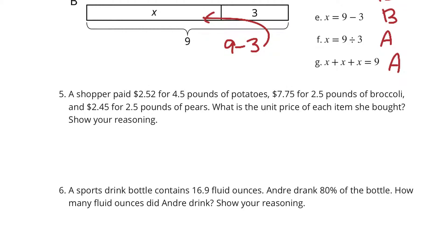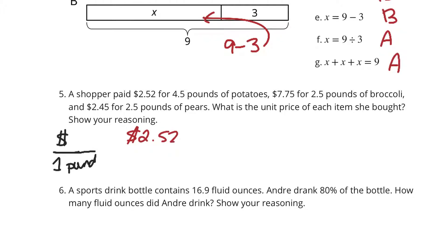Question 5: a shopper paid $2.52 for 4.5 pounds of potatoes, $7.75 for 2.5 pounds of broccoli, and $2.45 for 2.5 pounds of pears. What is the unit price for each item? Unit price is always our amount of money over 1 pound. Starting with potatoes: $2.52 over 4.5 pounds. When you divide this out, you get 56 cents per pound.